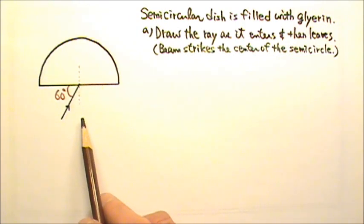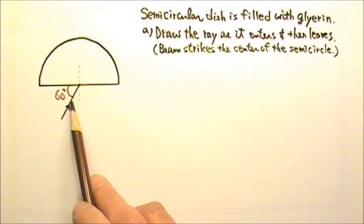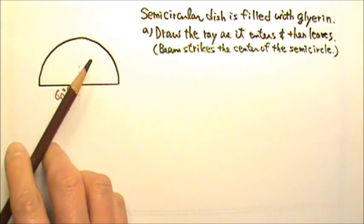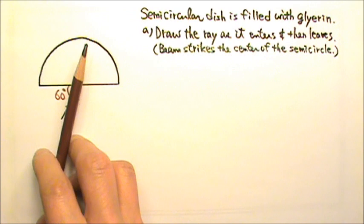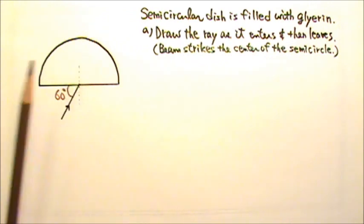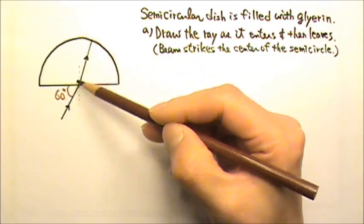And remember, these angles are measured between the ray and the normal line. So the ray bends this way for a smaller angle of refraction. So this is the ray in glycerin.